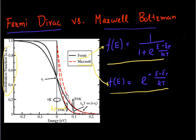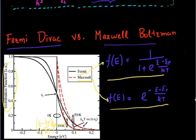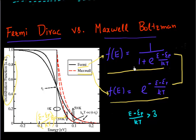This is plotted as a function of (E minus EF) over kT. What I see is that as long as my energy — the minimum energy, which in this case happens to be the conduction band — the difference of this minimum energy with the Fermi energy is greater than a few kT, both Fermi-Dirac and Maxwell-Boltzmann statistics are equivalent. So if (E minus EF) over kT is greater than 1, or to be safe, greater than 3, then both of these expressions are equivalent.